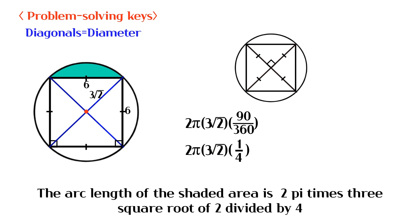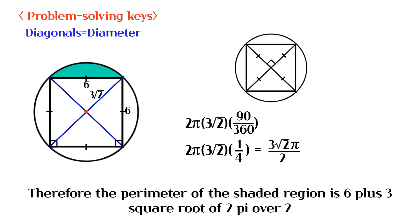The arc length of the shaded area is 2 pi times 3 square root of 2 divided by 4. Therefore, the perimeter of the shaded region is 6 plus 3 square root of 2 pi over 2.